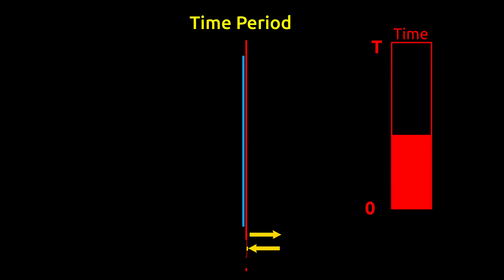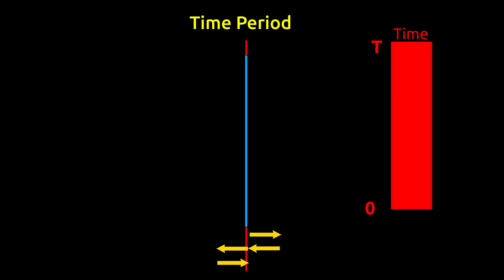Another characteristic is time period, which is nothing but time taken in completing one oscillation. It is related to frequency and calculated by taking the inverse of it.